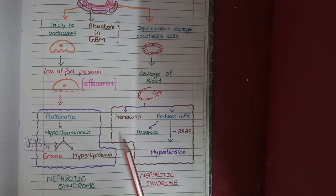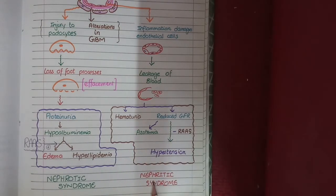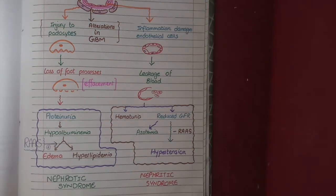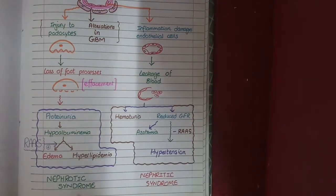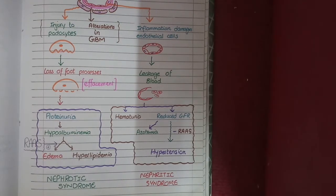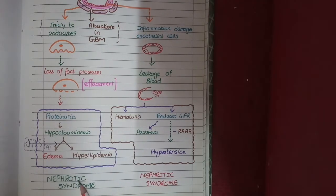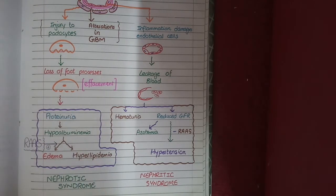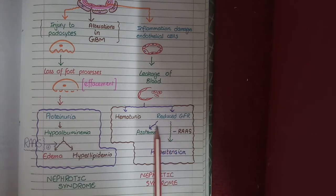The constellation of hematuria, azotemia, and hypertension is known as nephritic syndrome. In conclusion, nephrotic syndrome is caused by injury to podocytes or physiochemical changes in the glomerular basement membrane that allow leakage of proteins, whereas nephritic syndrome is caused by injury to endothelial cells. Nephrotic syndrome presents with proteinuria, hypoproteinemia, edema, and hyperlipidemia, whereas nephritic syndrome is characterized by hematuria, azotemia, and hypertension.